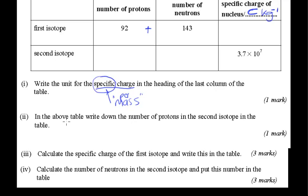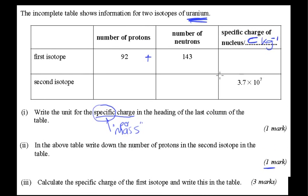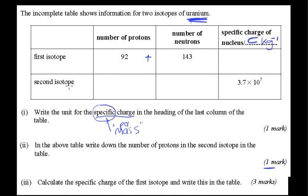Question two. In the above table, write down the number of protons in the second isotope in the table. Well, it's only a one mark question, so it's a write down, we don't need to do any calculations. And this is an isotope. So if it's an isotope of uranium, then it must have the same number of protons because that's what defines it as an element. If it had 93 protons, it would be a different element. So there we are, 92 for the second one. One mark.